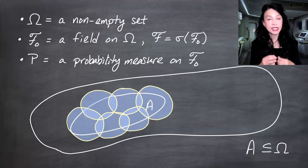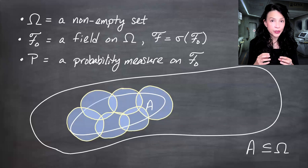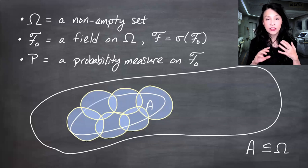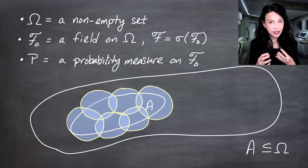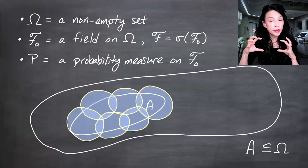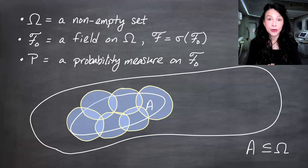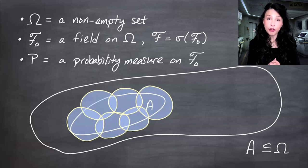Another idea might be to cover A with a single set from F-naught and estimate the probability measure of A with that single set's probability, looking at all possible single sets until you get the smallest one. But single sets and disjoint sets are all included in what is our more general definition of an outer measure. We call this thing an outer measure because we're coming at the probability measure from the outside of the set A. You can imagine defining an inner measure where you start with sets contained within A and try to get the maximum probability measure. But in this video, we're talking about outer measures, and we're calling our outer measure P-star.